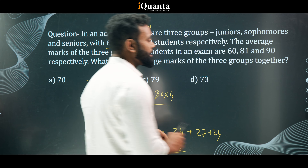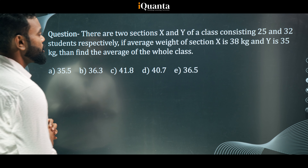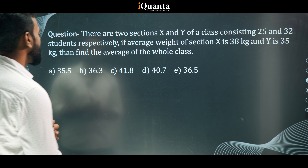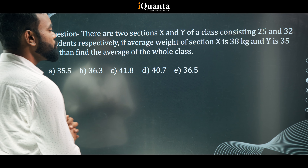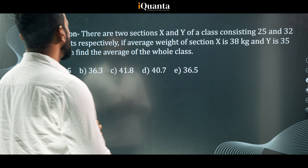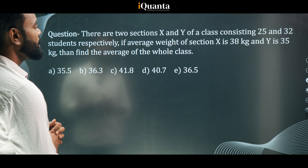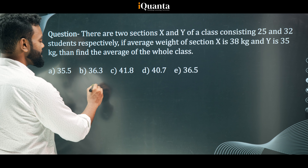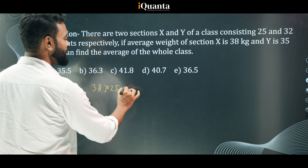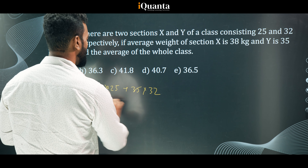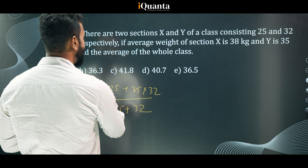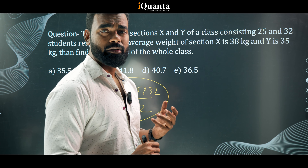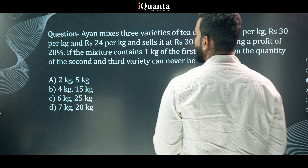Next: There are two sections X and Y of a class consisting of 25 and 32 students respectively. The average weight of section X is 38 kg and Y is 35 kg. Find the average weight of the whole class. The formula gives: (38×25 + 35×32) / (25+32). This is a calculation-based question demonstrating how we use the concept of weighted average to simplify the work.